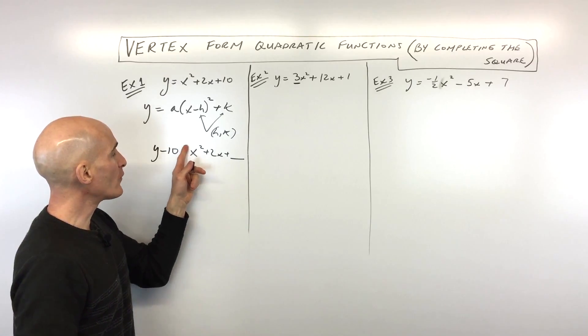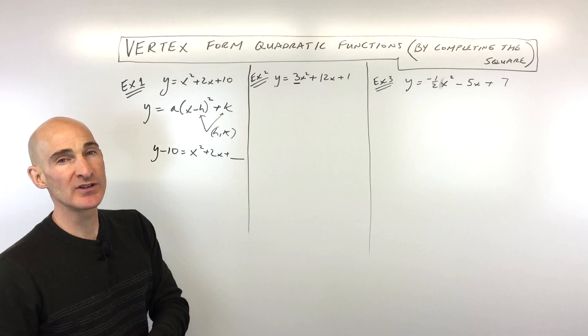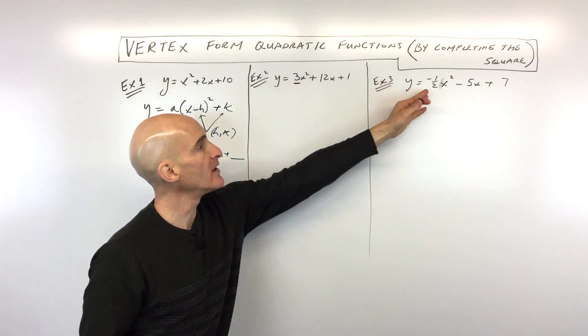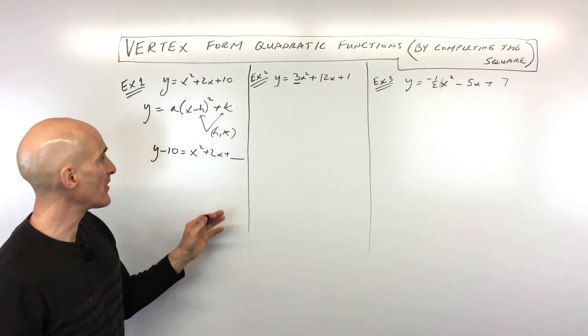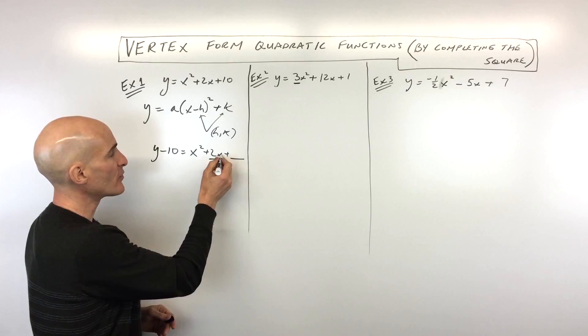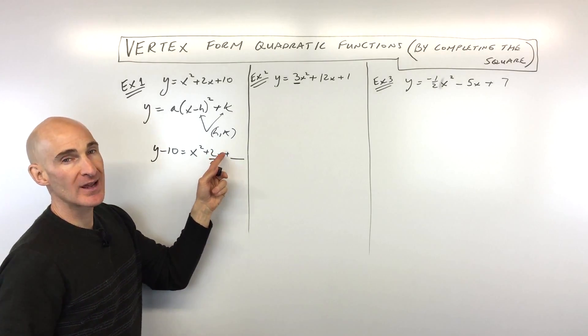Now, when the leading coefficient, the number in front of the x squared, is a positive 1, it's very easy to do this completing the square process. And the other two, we're going to do one where there's not a leading coefficient of 1, and it'll be a little more challenging, and I'll show you how that works. But the first thing is you want to look at this middle coefficient here, this number in front of the x, to the left of the x. You want to take half of that number and square it.